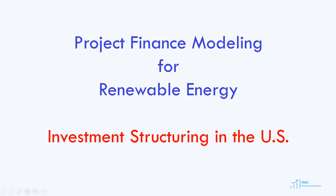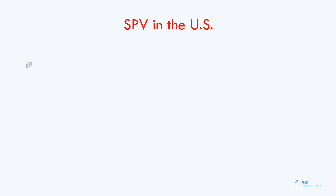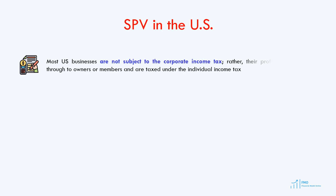We will turn our attention to the case of renewable projects in the United States. Most U.S. businesses are not subject to the corporate income tax. Rather, their profits flow through to owners or members and are taxed under the individual income tax. Such entities, whose income flows through to their owners, are called pass-through businesses or pass-through entities.